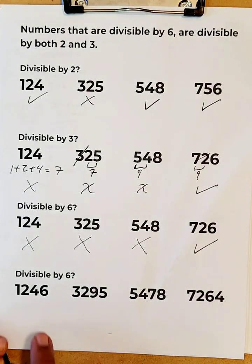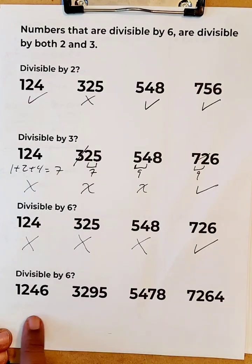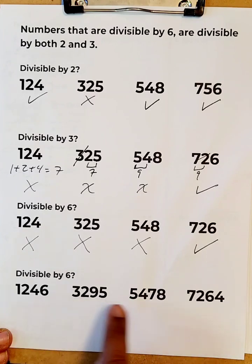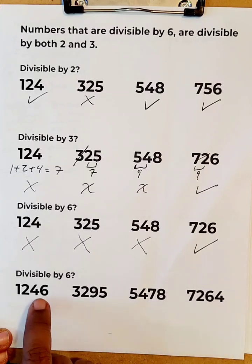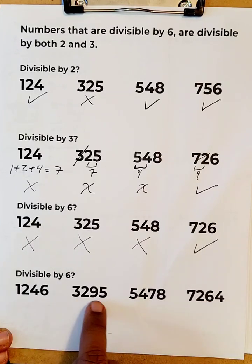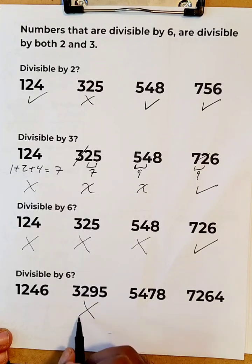Now let's check out this next set of numbers. First, we want to find out what numbers are divisible by two. These are even numbers, so they are all divisible by two except for this one, which is out.